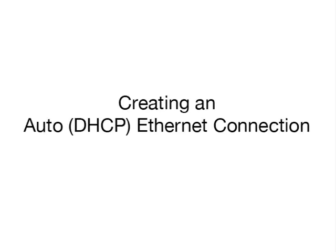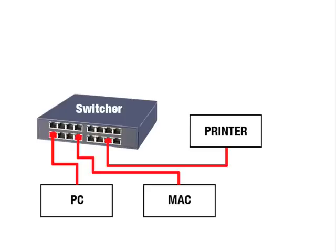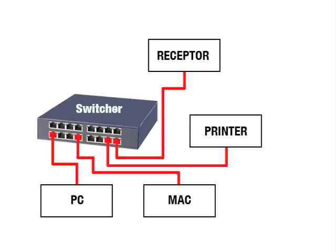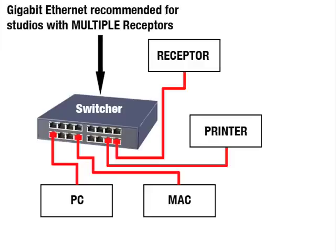If you have a more complicated network that contains multiple Ethernet devices, you'll need to use an Ethernet switcher to connect all of them. Muse Research recommends that you use a switcher with a minimum bandwidth of 100BaseT, although if you plan to use multiple receptors in a uni-wired studio, then a fast gigabit switcher will yield more simultaneous audio and MIDI tracks.